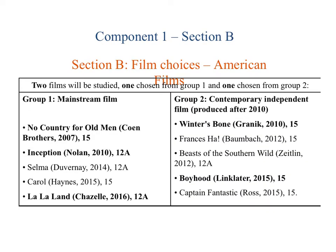Section B takes films from a much more recent time period. We look at a film from the mainstream Group 1, and also a film from the contemporary independent film section, produced after 2010. Winter's Bone or Boyhood are two films that you are likely to have heard of from that section. Winter's Bone and Frances Ha both have strong female protagonists, which is a really interesting area of film now.